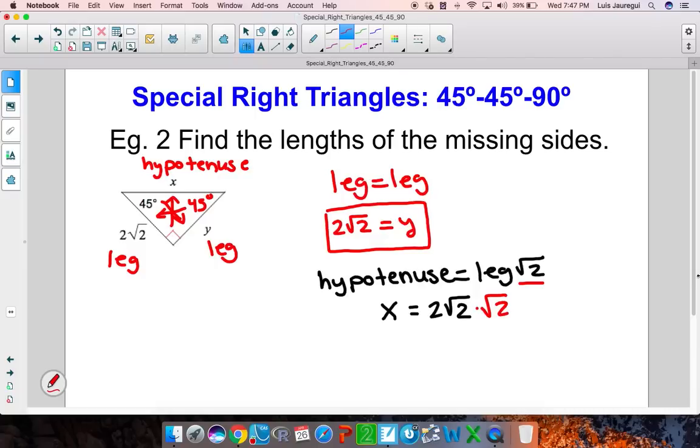Now you just need to be careful here because x then will be 2 times the square root of 2 times the square root of 2, which becomes the square root of 4. And the square root of 4, we know is 2. So this is just 2 times 2, which is 4. Therefore, your x has a value of 4.